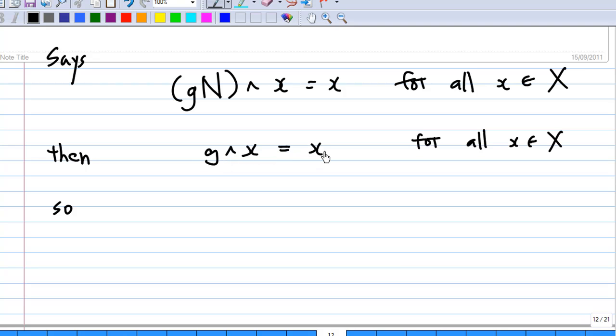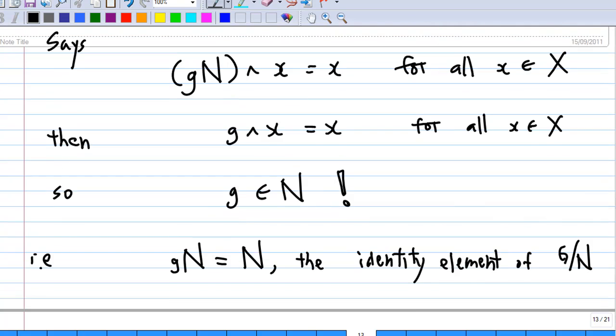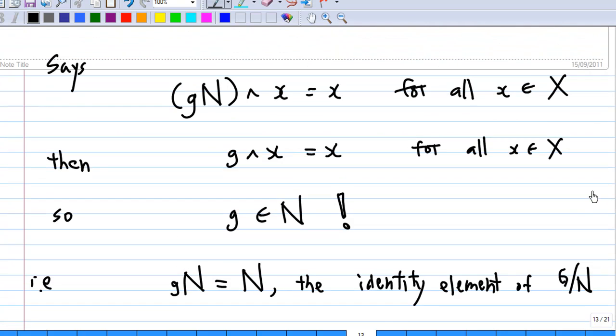Then, gN^x we know is g^x. So, there is g^x equals x for all x. That means that g is an element, this element small g here is an element of N. So, we conclude that gN is equal to N. Therefore, gN is actually the identity element of G by N.